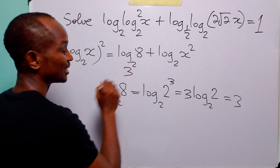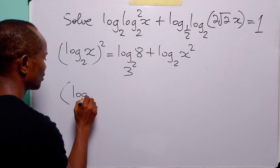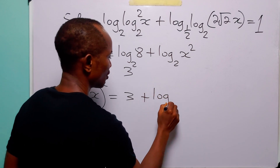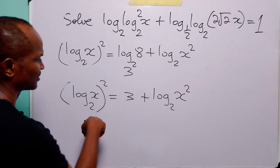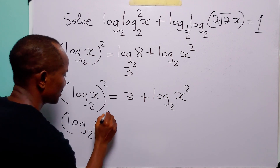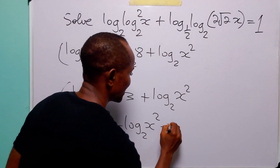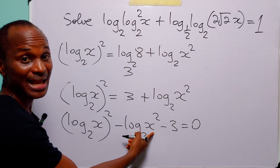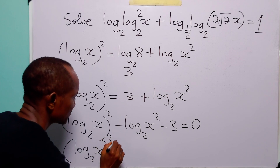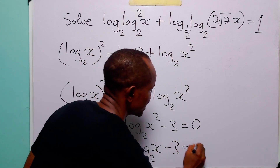So this whole term is simply equal to 3, and the equation becomes log to base 2 of x squared is equal to 3 plus log to base 2 of x squared. Rearranging, we have log to base 2 of x squared minus 2 times log to base 2 of x minus 3 is equal to 0.